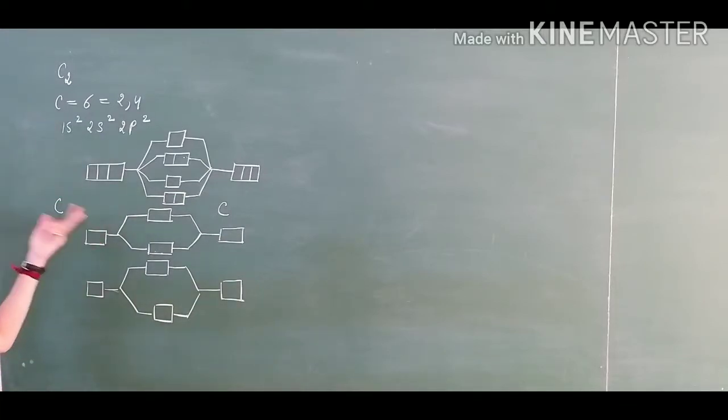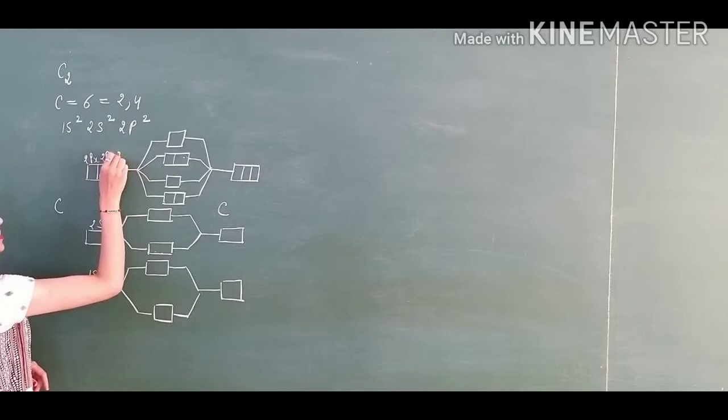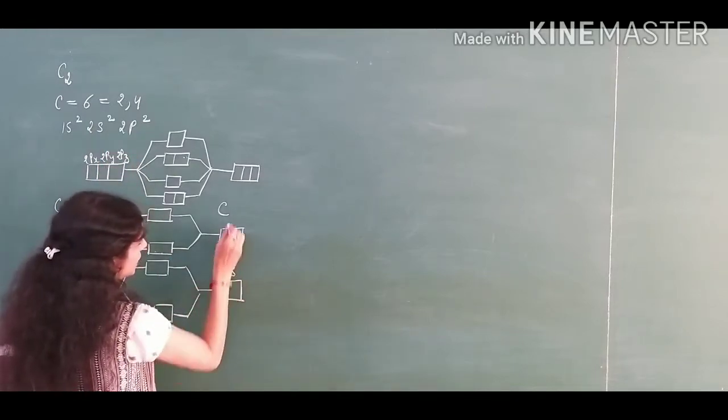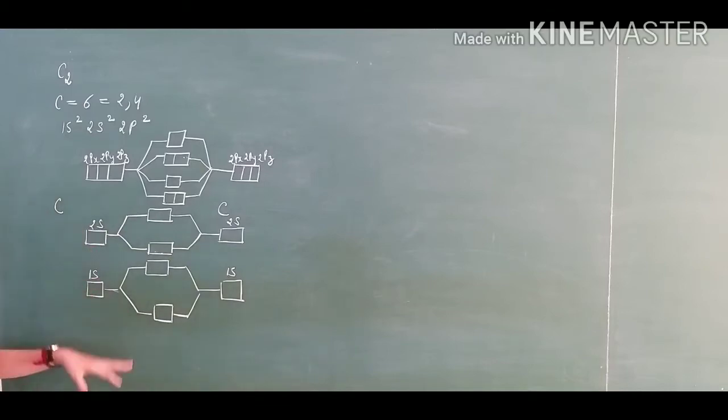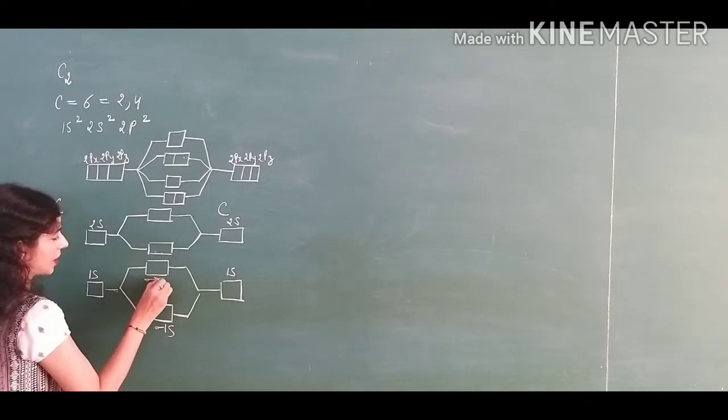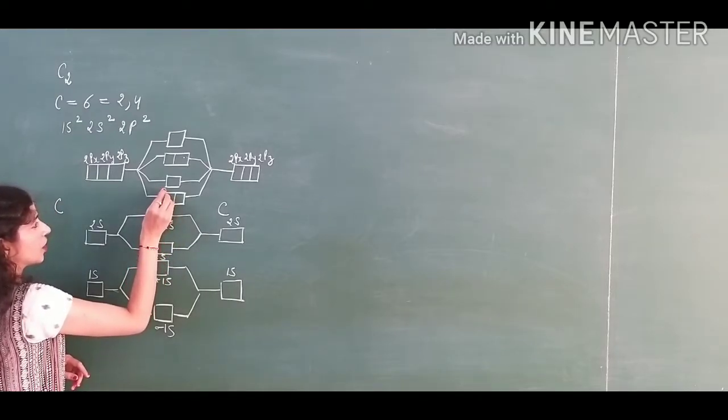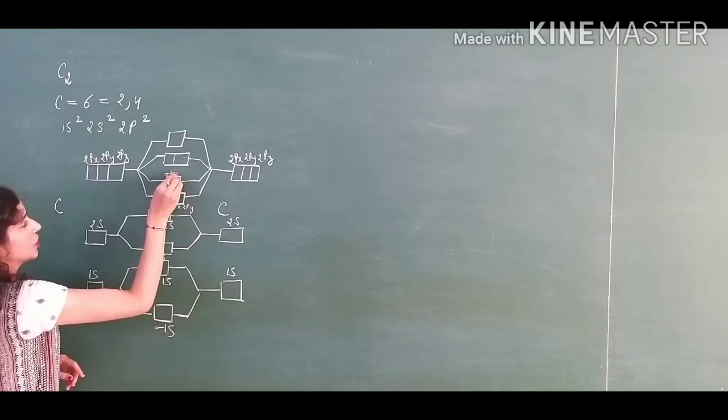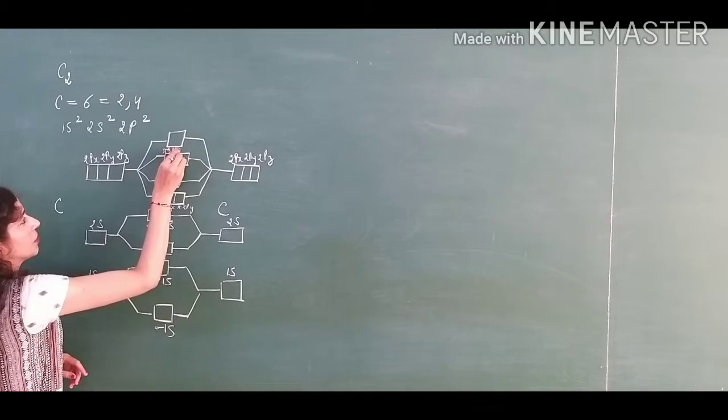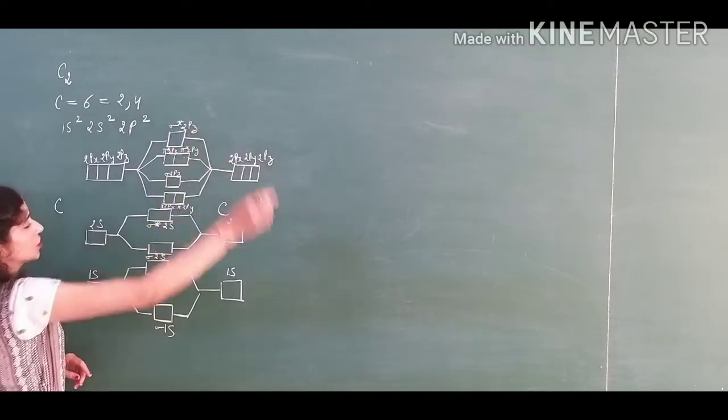Now what we have to do? We have to fill the electrons. This is 1s, this is 2s, and this is 2px, 2py, and 2pz. Same here: 1s, 2s, 2px, 2py, and 2pz. I have mentioned here the energy level for molecular orbitals: sigma 1s, sigma antibonding 1s, sigma 2s, sigma antibonding 2s. This is for pi 2px, pi 2py, and sigma 2pz.